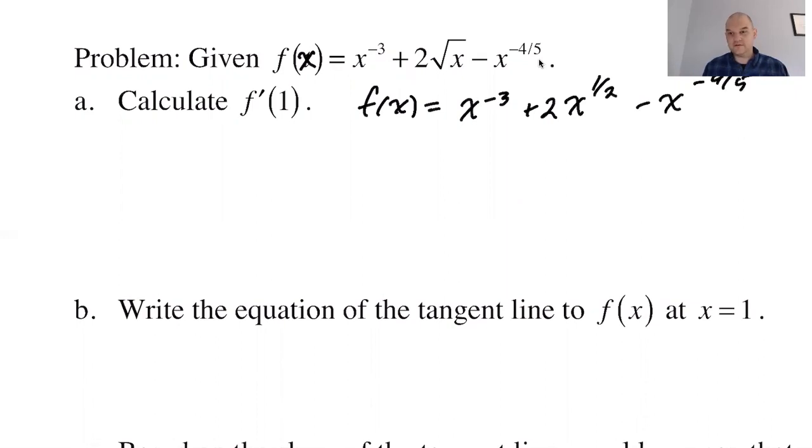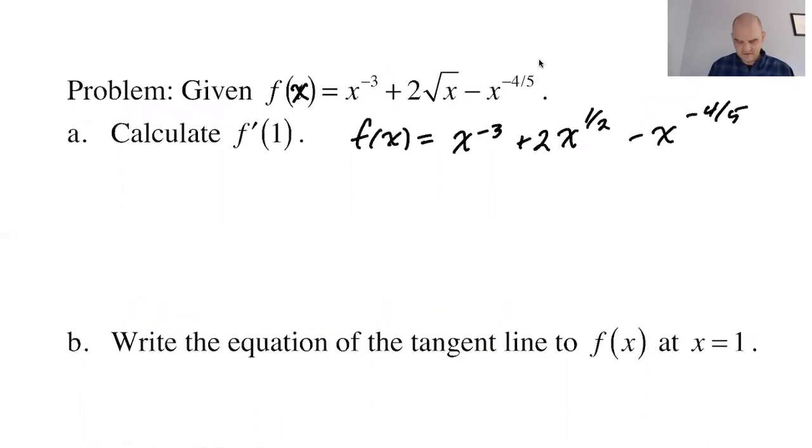That's a weird function—you're not gonna run into that function all that often. F prime of x, so power rule: bring the exponent down, so negative 3x to the subtract 1 from negative 3, you get negative 4.